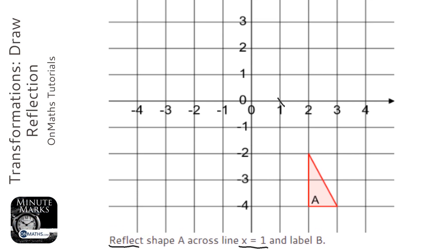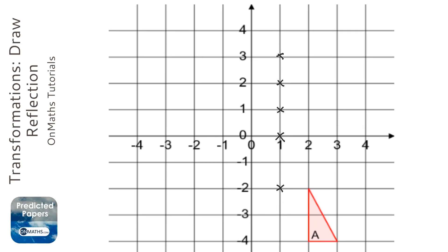Well, I know x equals 1 here, but x equals 1 here, here, here, in fact, all the way along this line here. So the line x equals 1 is going to be this line here.